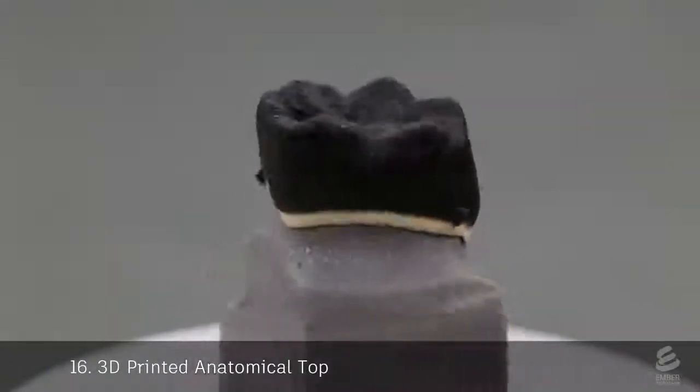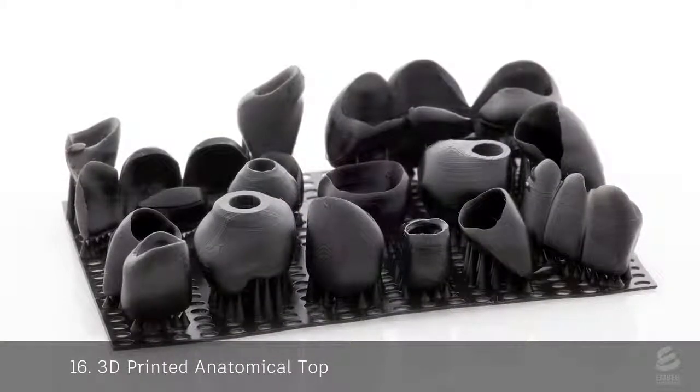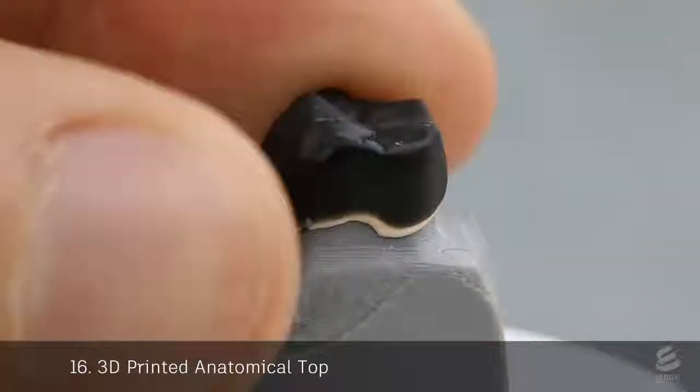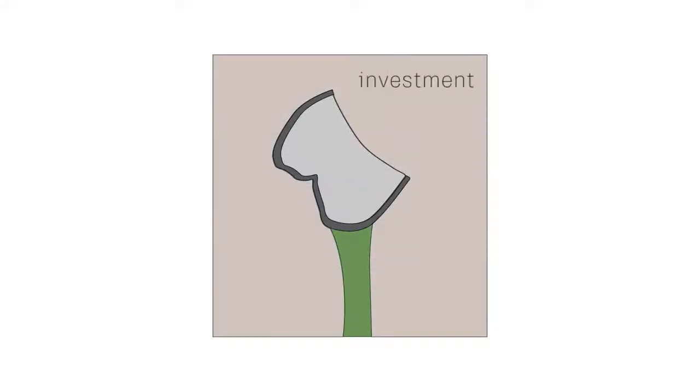To create the porcelain layer, an anatomical top is first 3D printed on Ember in castable resin. The top slides onto the opaque casting. The casting and top are then attached to a wax sprue.